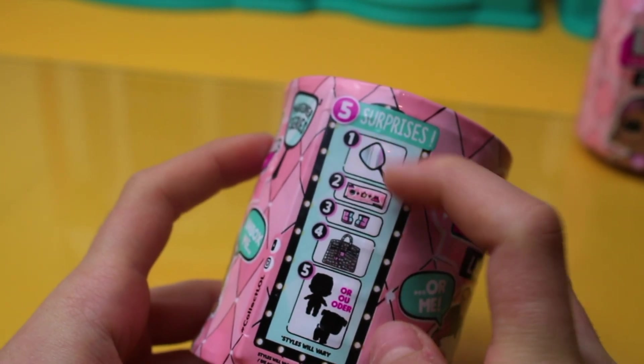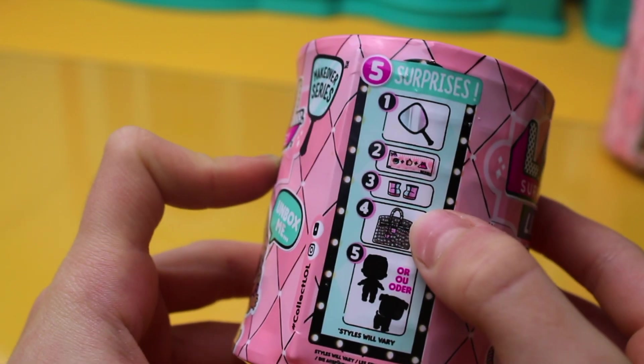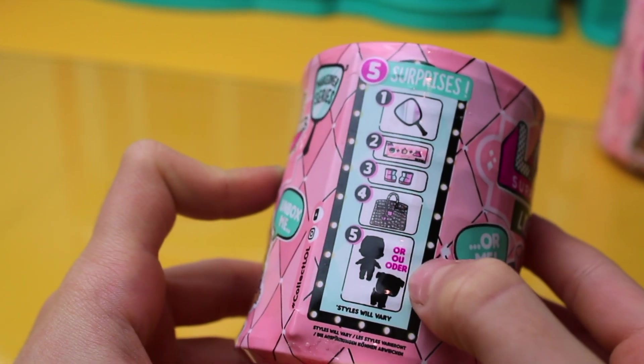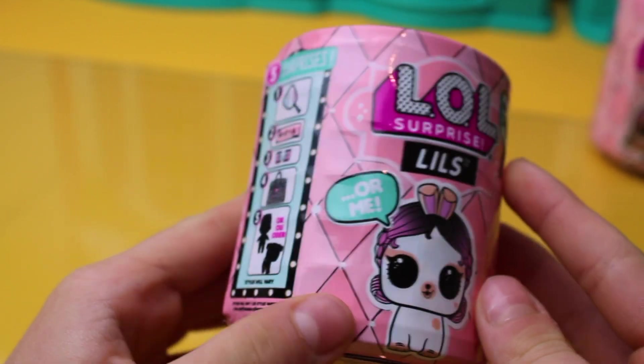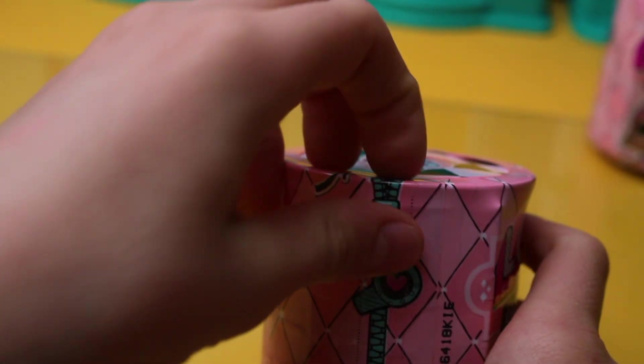Ice pack, a secret message, shoes, and there's a bag. And there's two types of LOL surprises that are the LOL Surprise Pets and LOL Surprise Little Sisters, the children.